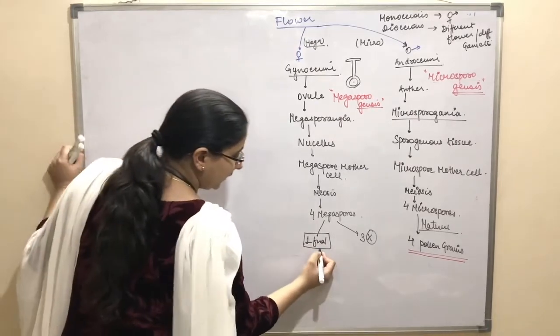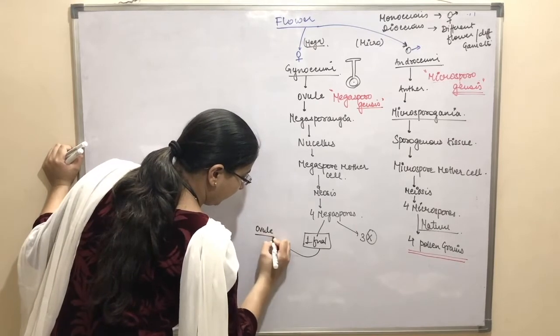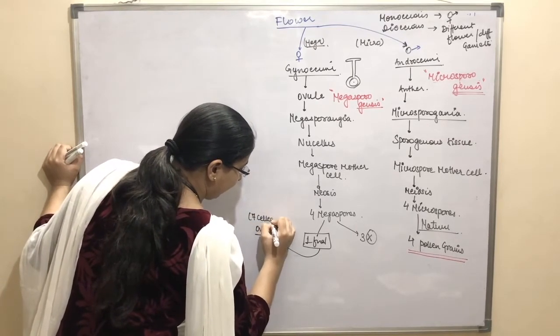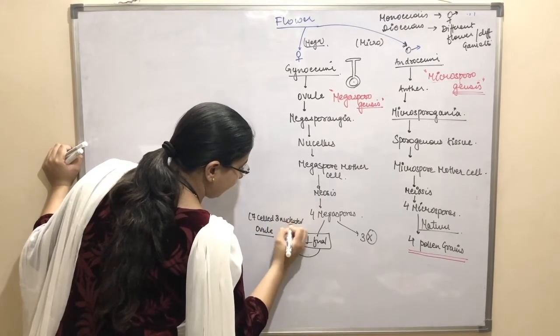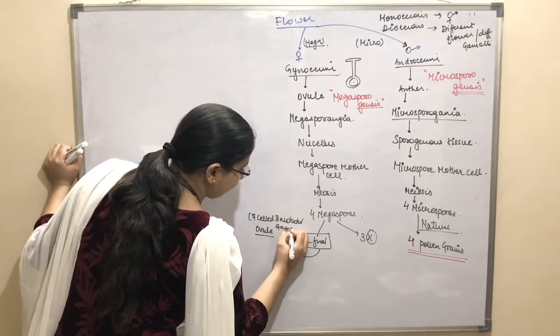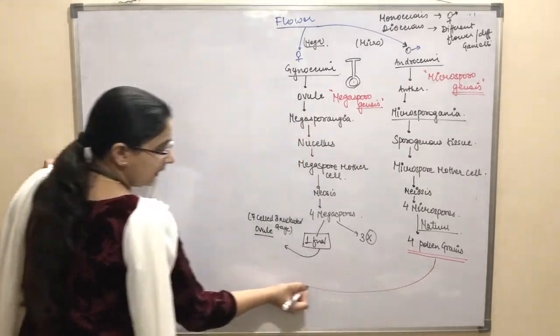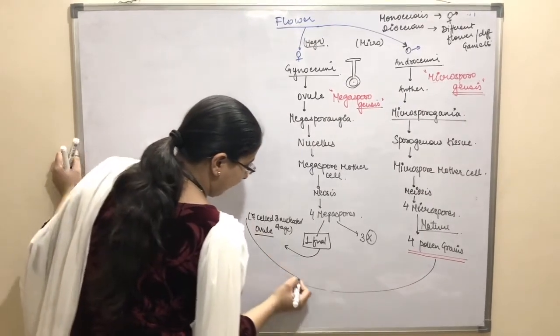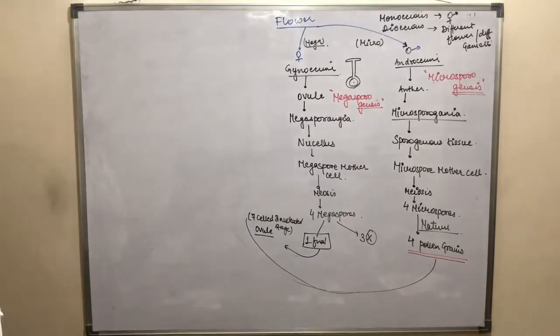This will turn out to be a complete ovule and this ovule will be having 7 cell 8 nucleated stage.